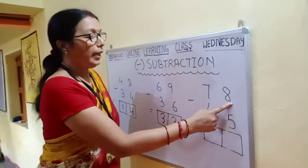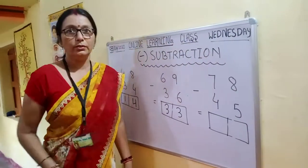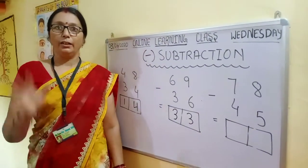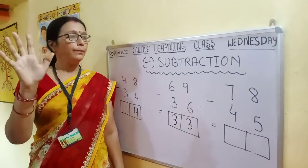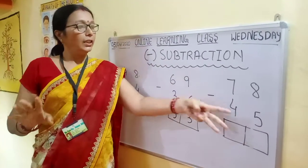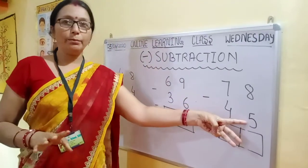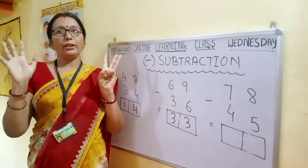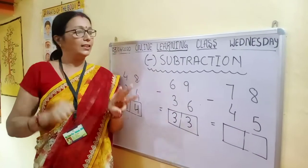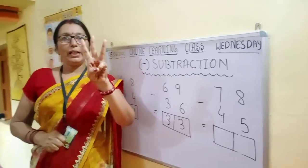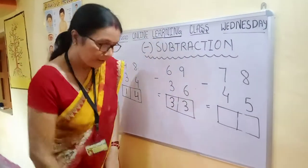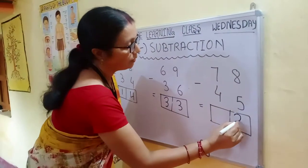Next row, first number is 8. Take out your 8 fingers — 5 and 3: 6, 7, 8. The next number is 5 — take away 5 fingers. How many are left? 1, 2, 3. Write down 3.